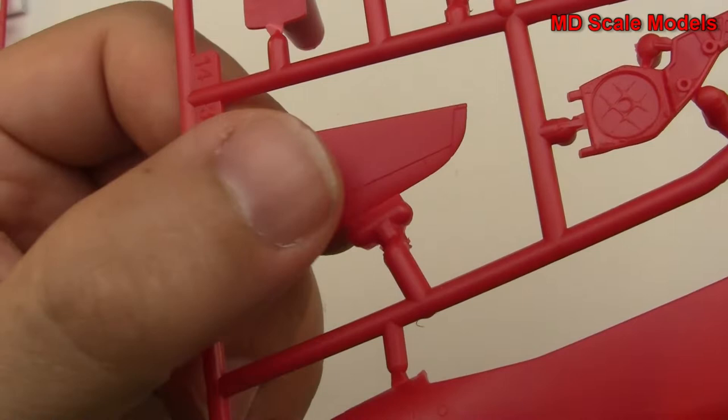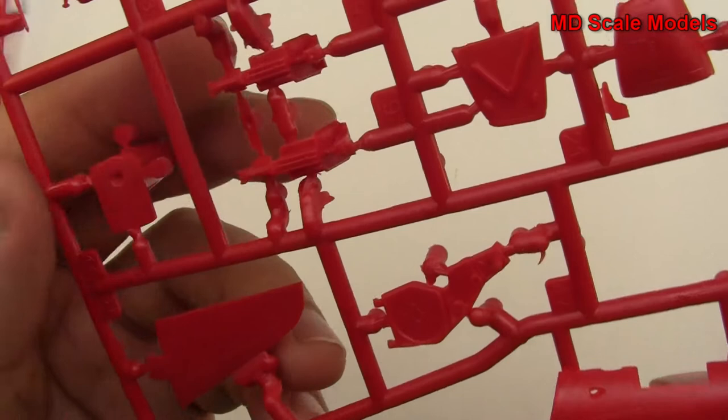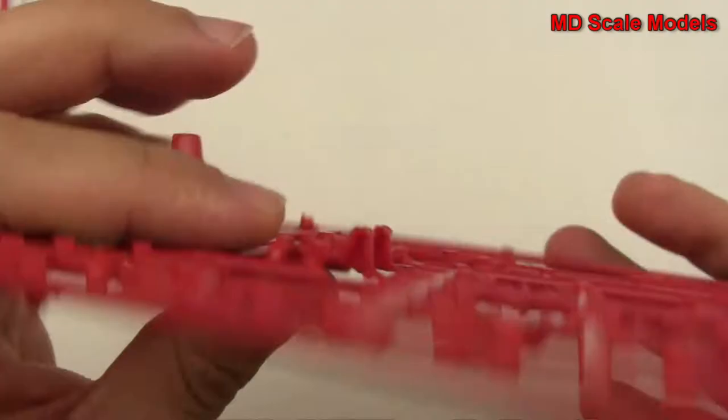Here is our elevator, we've got our exhaust there and wheel well cover there. Air intakes, the other side of the air intakes there. And here are the ejection seats from the front, very nicely molded. You can see we've got some seatbelts molded in.